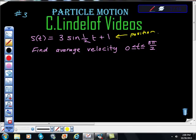So here's our position. And we're asked to find the average velocity from t is greater than zero to t is less than or equal to 3π/2.